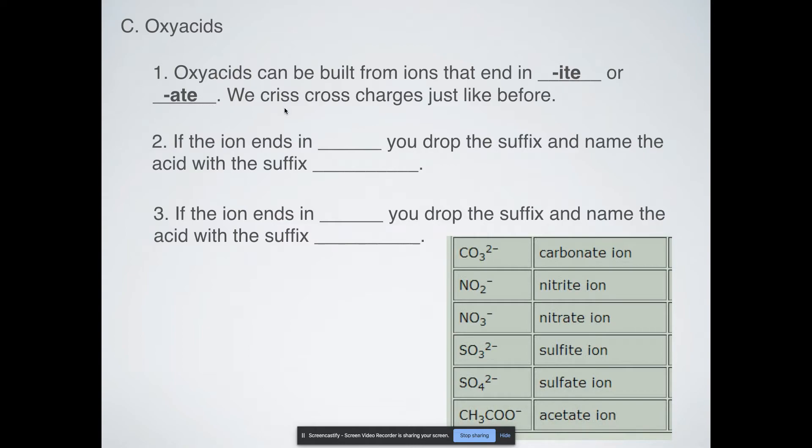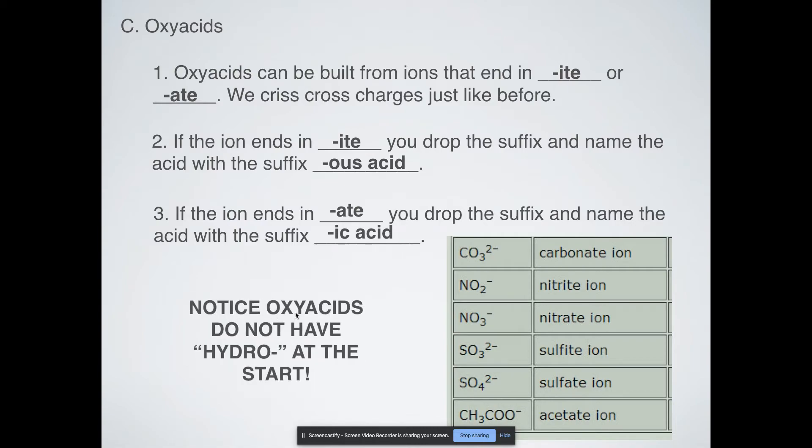There are two sets of rules: one for if they end in -ite and one if they end in -ate. If they end in -ite you drop the ending and you change it to -ous acid. On the other hand, if it ends in -ate you drop the -ate and you call it -ic acid. Notice oxyacids never have hydro in front of them. A lot of mistakes get made when we try to combine the rules for binary acids with oxyacids, and they are named differently.